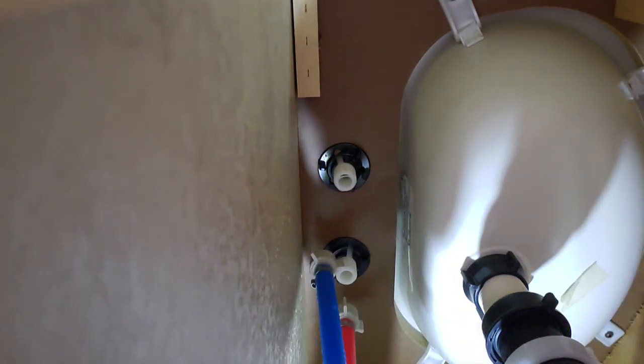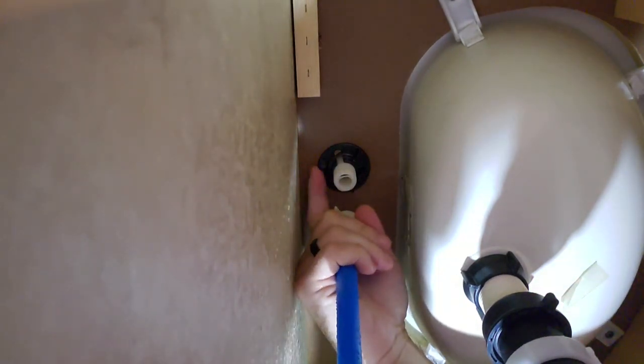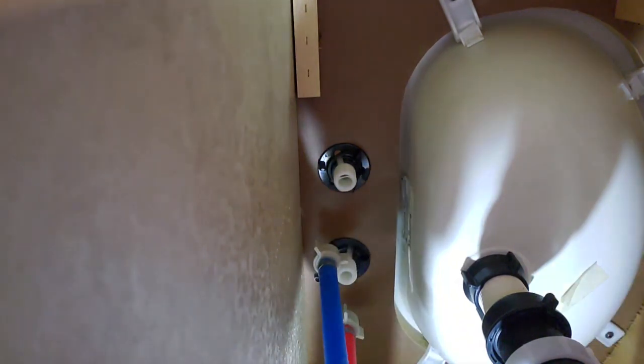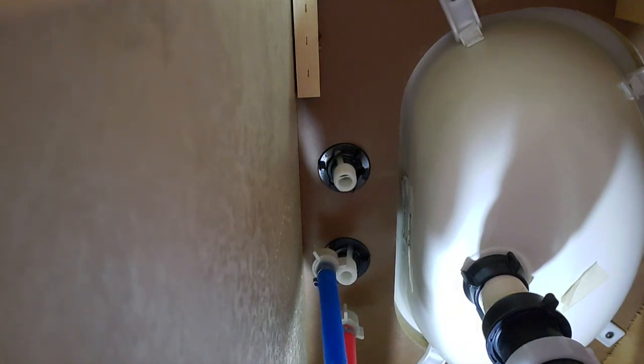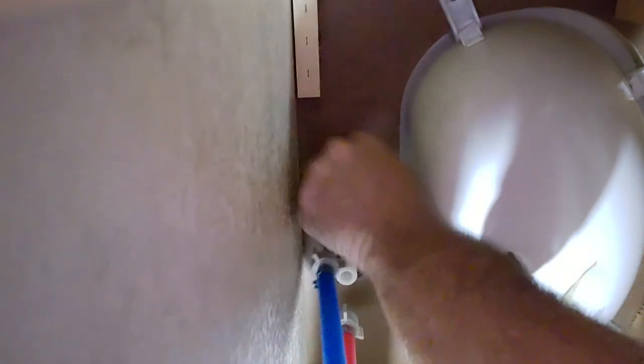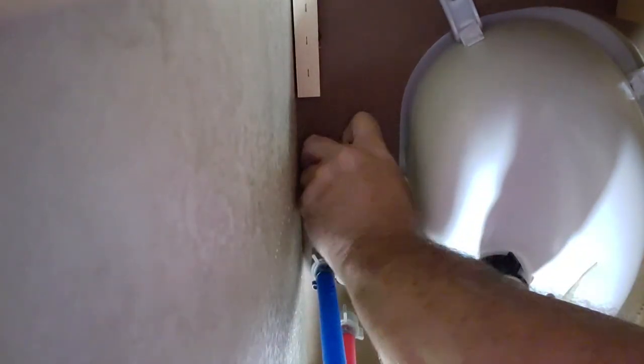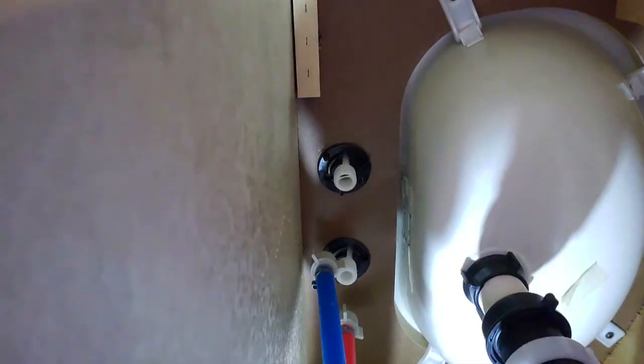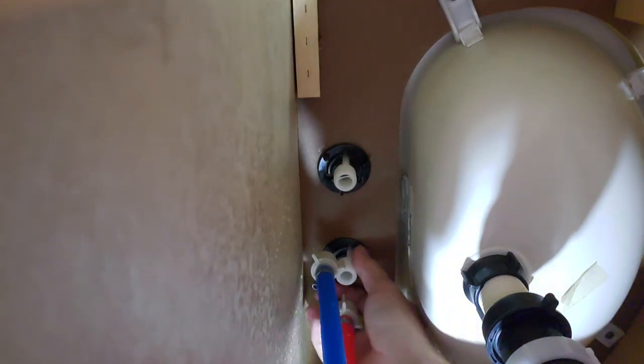Now there's a retaining screw up here, this black washer slash nut assembly. It's one thing, that's what's actually holding it on. Let me get that loose in here. It's a little tighter but it came off pretty easy. I'll get the other one on the other side.